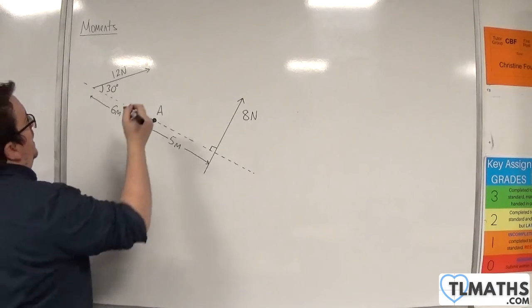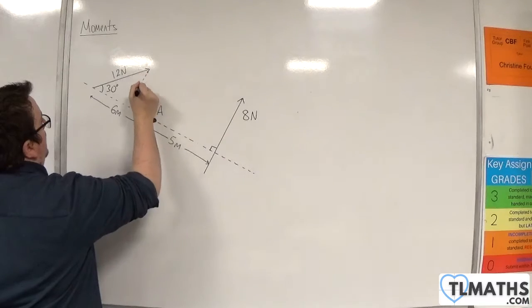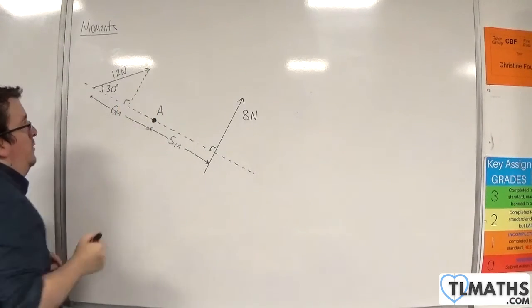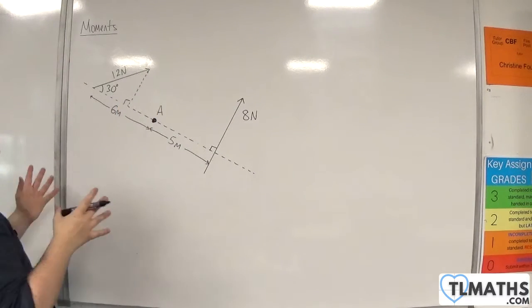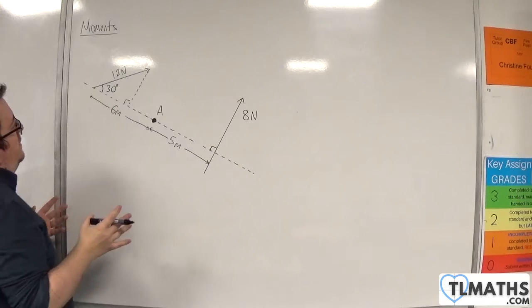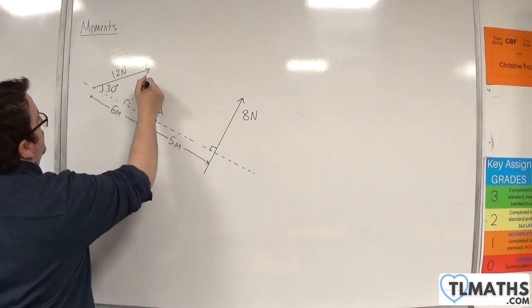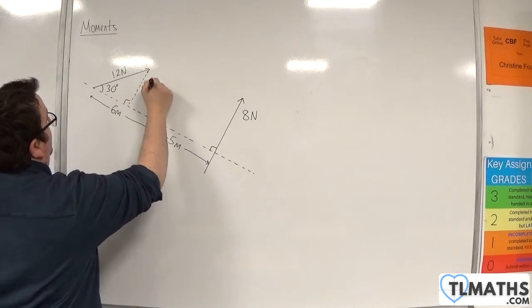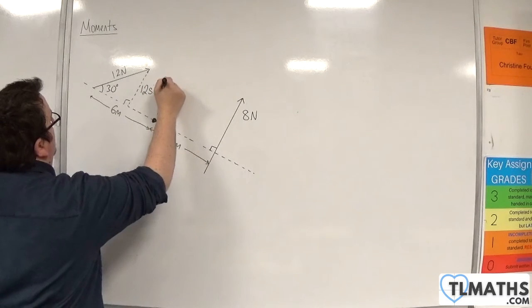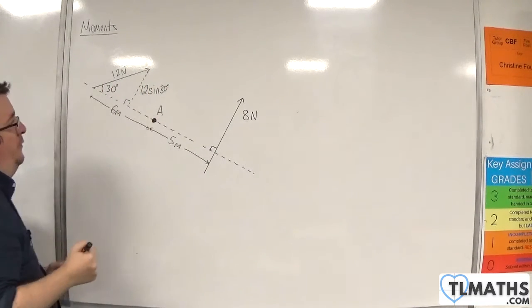My natural way of working would probably be to complete the triangle like that. That's the first thing that my brain goes to. And then thinking about, well, this is going to be 12 sine 30, because it's the opposite side. And then this would be 12 cosine 30.